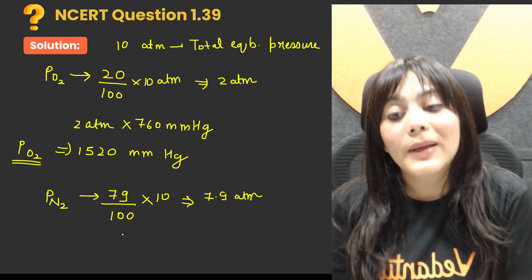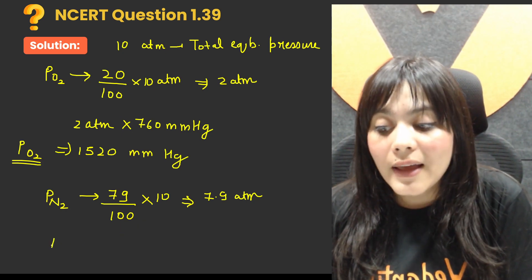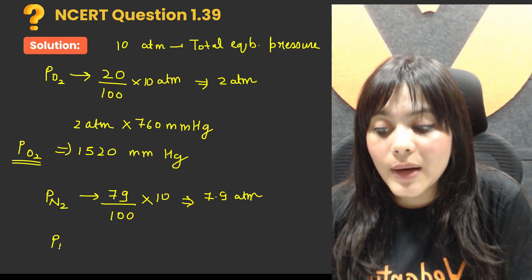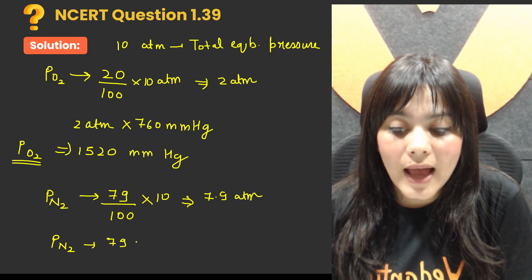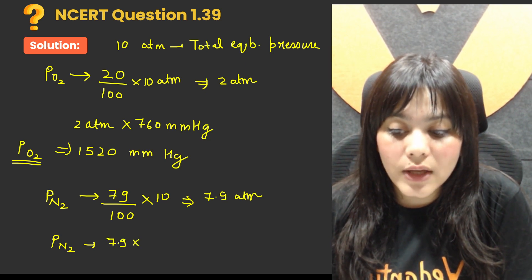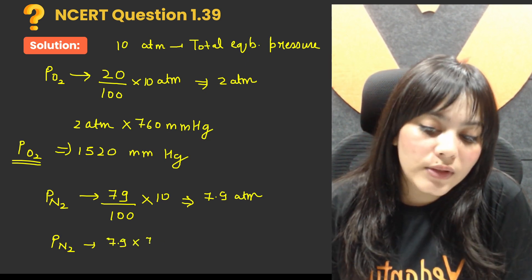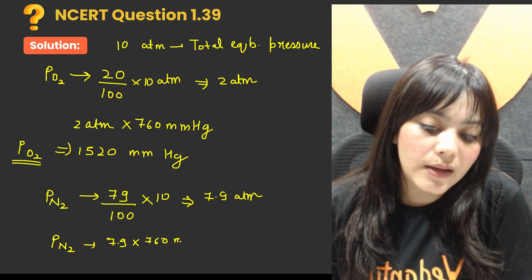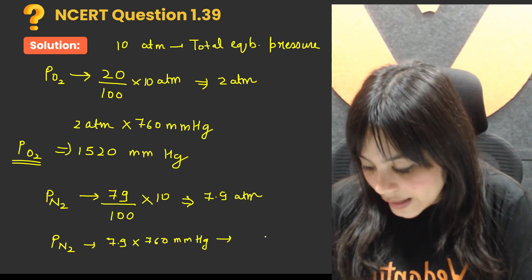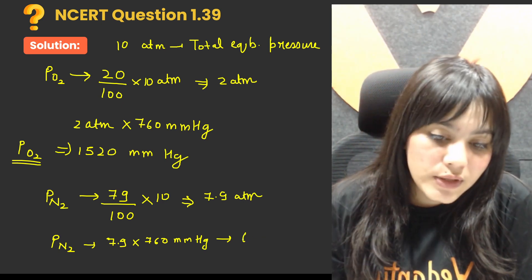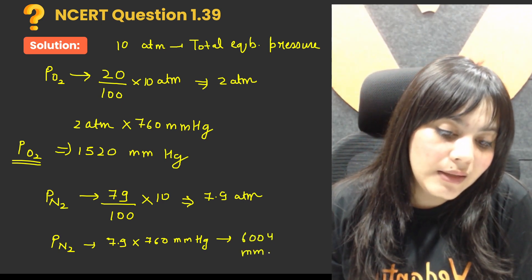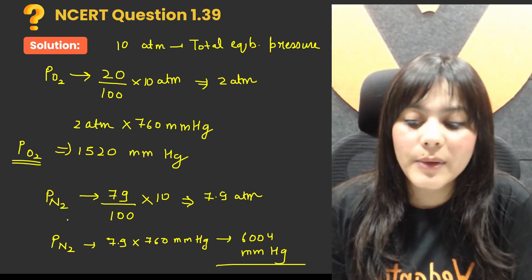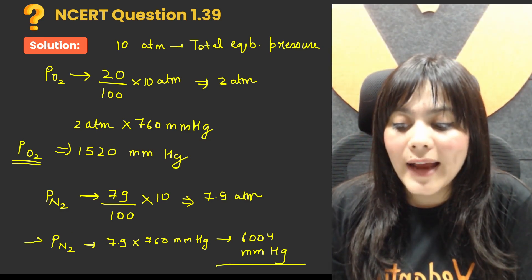Now I convert this to mmHg as well. The partial pressure of N₂ is 7.9 × 760 mmHg, which gives us 6004 mmHg. This is the partial pressure of nitrogen. Now we have partial pressures for both oxygen and nitrogen.